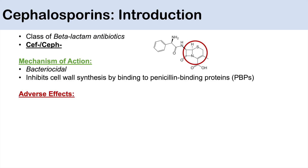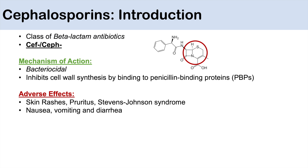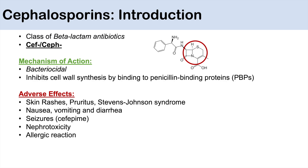Adverse effects of cephalosporins in general include skin rashes, pruritus, and Stevens-Johnson syndrome. Some of the more common adverse effects include nausea, vomiting, and diarrhea. We may also see a risk of seizures, especially with the cephalosporin cefepime. Nephrotoxicity is also a possible adverse effect, and we may also see allergic reactions.